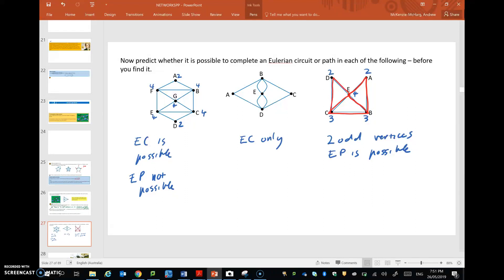So that's how we predict whether an Eulerian circuit is possible. If all the vertices are of even degree, you can do an Eulerian circuit. If there are two and only two odd vertices, then you'll be able to complete an Eulerian path. Very interesting. Okay, so go ahead and try some of those questions.